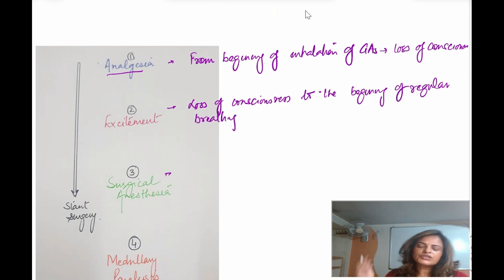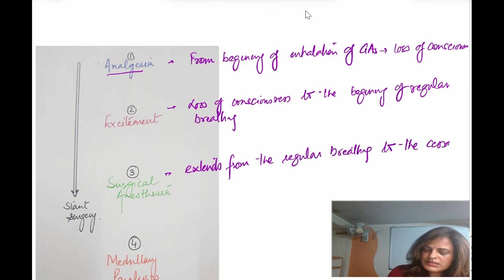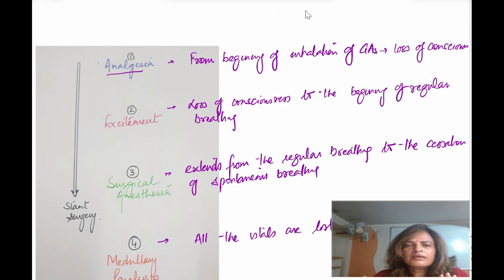Then third stage, stage of surgical anesthesia. This extends from the regular breathing to the cessation of spontaneous breathing. And last one is stage four, that is medullary paralysis. Here all the vitals are lost. So this is a broad picture of stage of analgesia, excitement, surgical anesthesia, and medullary paralysis.